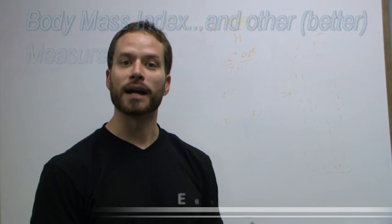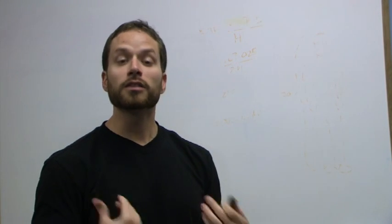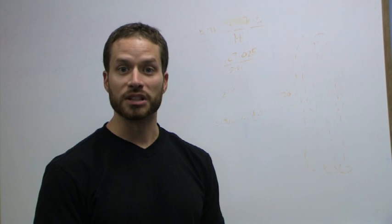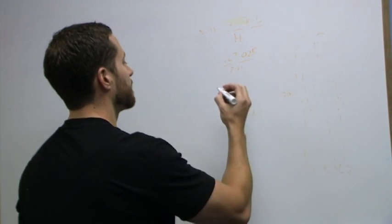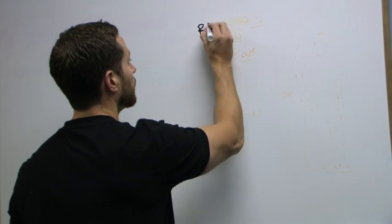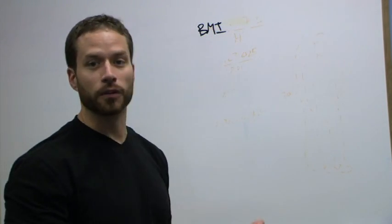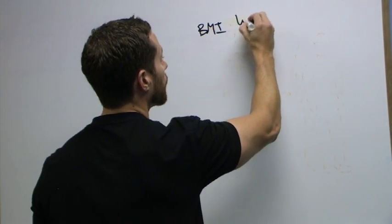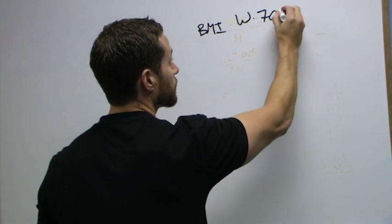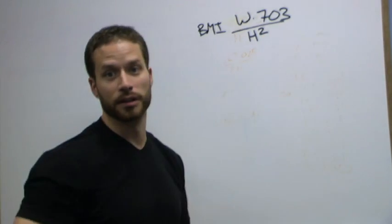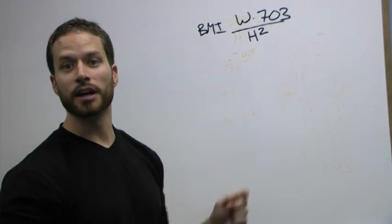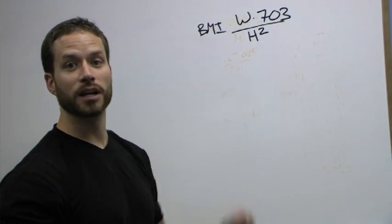is the BMI or body mass index. This equation has been around since about the 1800s and it's always been fairly limited. It's based on a fairly difficult equation which is your weight in pounds times 703 divided by your height squared.